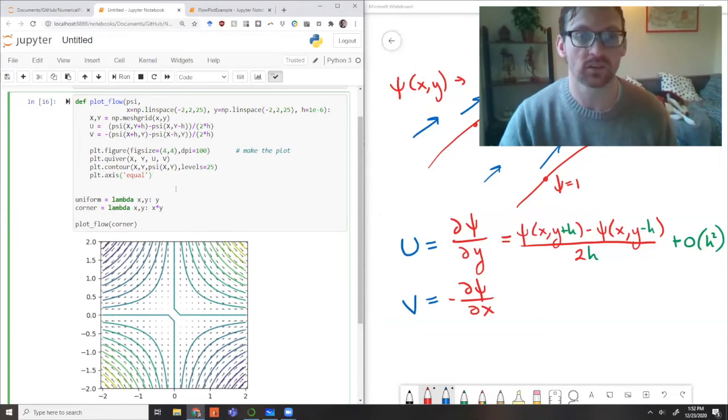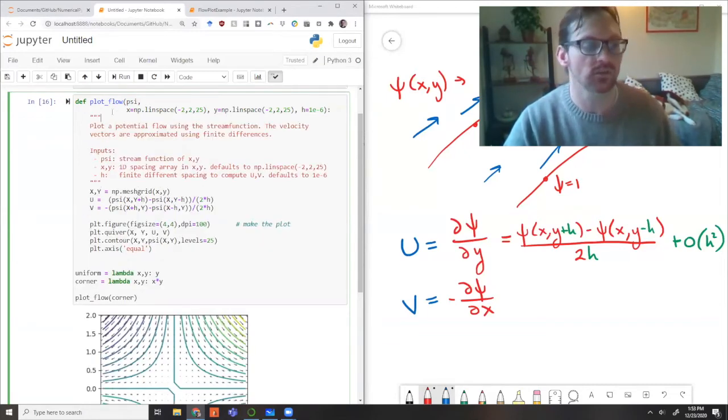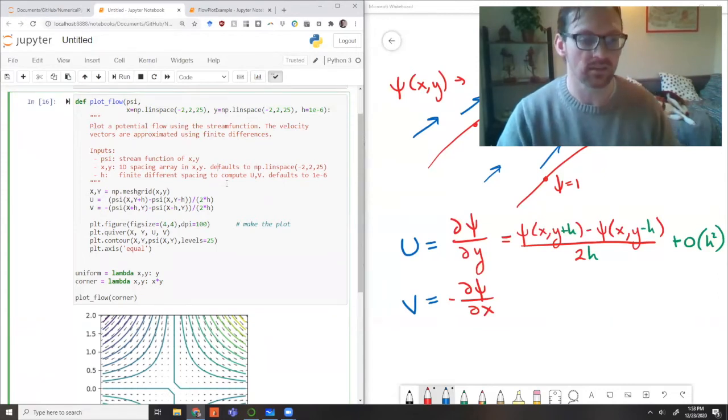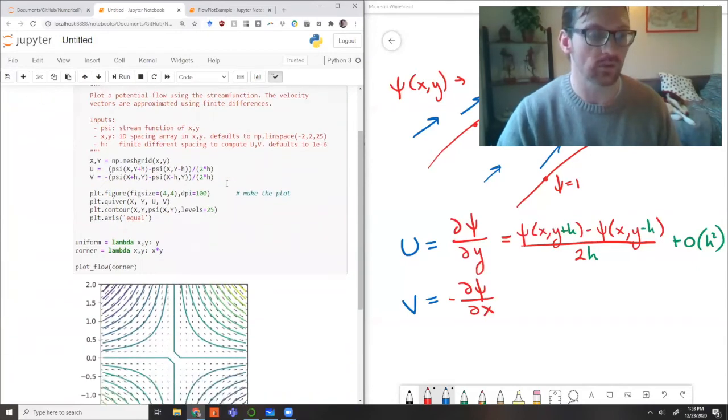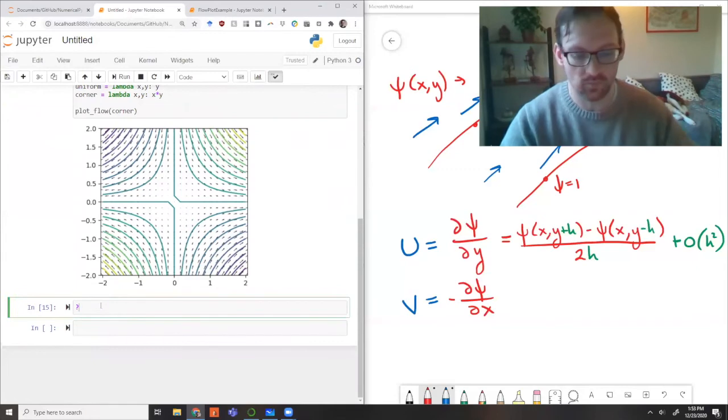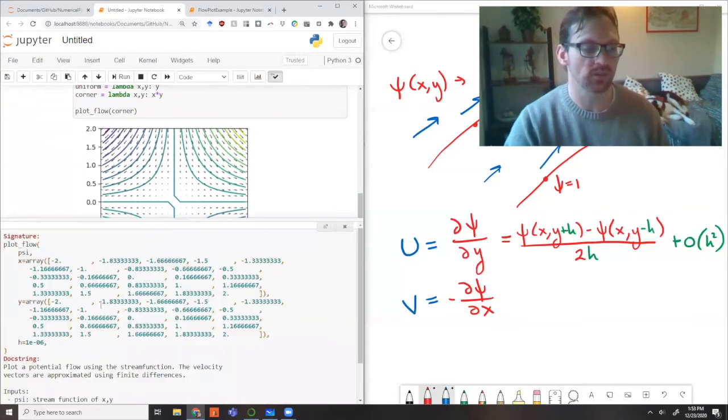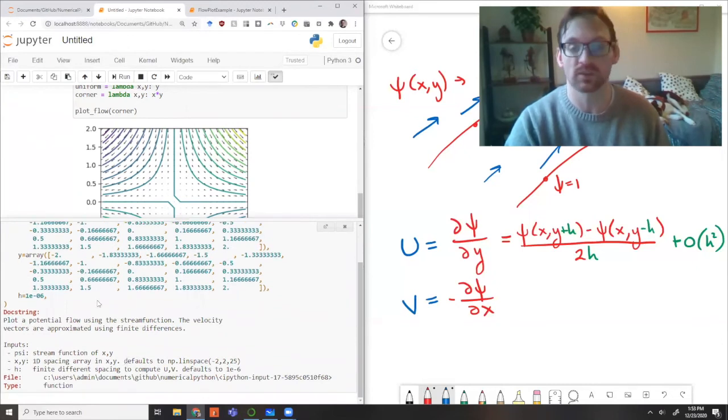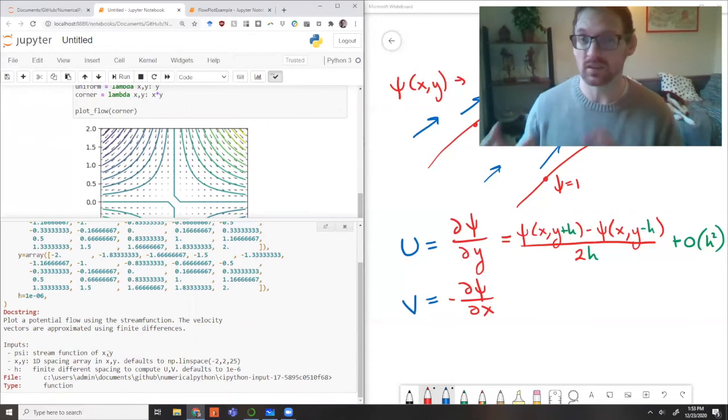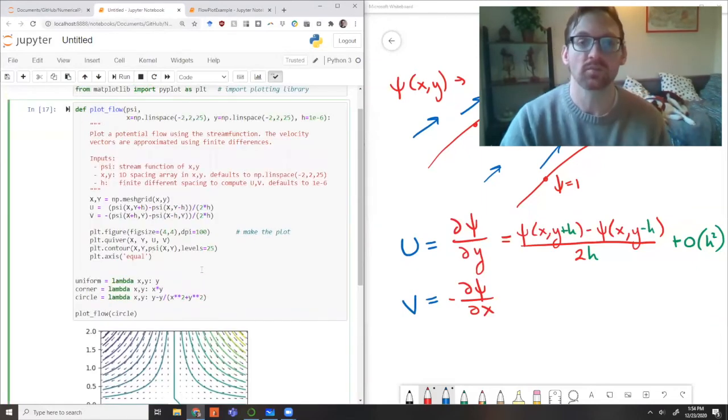I think it's worth adding a few more things to help make this function really useful. First, I think we should document the function. Here I've added a document string. I've had a little description saying it plots this thing using finite differences to get the velocities. I also talk about what the inputs are—psi, xy, and h. If they have default values, I say what those are. What that means is that after I evaluate this function, I can use the question mark command. If somebody else wants to know what the function does, they can look through this help string. That's a really nice way to make sure things stay organized. Remember that you are somebody else in a month when you pick this up and try to use it again.